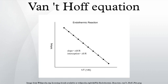For an endothermic reaction, heat is absorbed, making the net enthalpy change positive. Thus, according to the definition of the slope, for an endothermic reaction ΔH is positive and R is the gas constant, so the Van't Hoff plot should always have a negative slope.